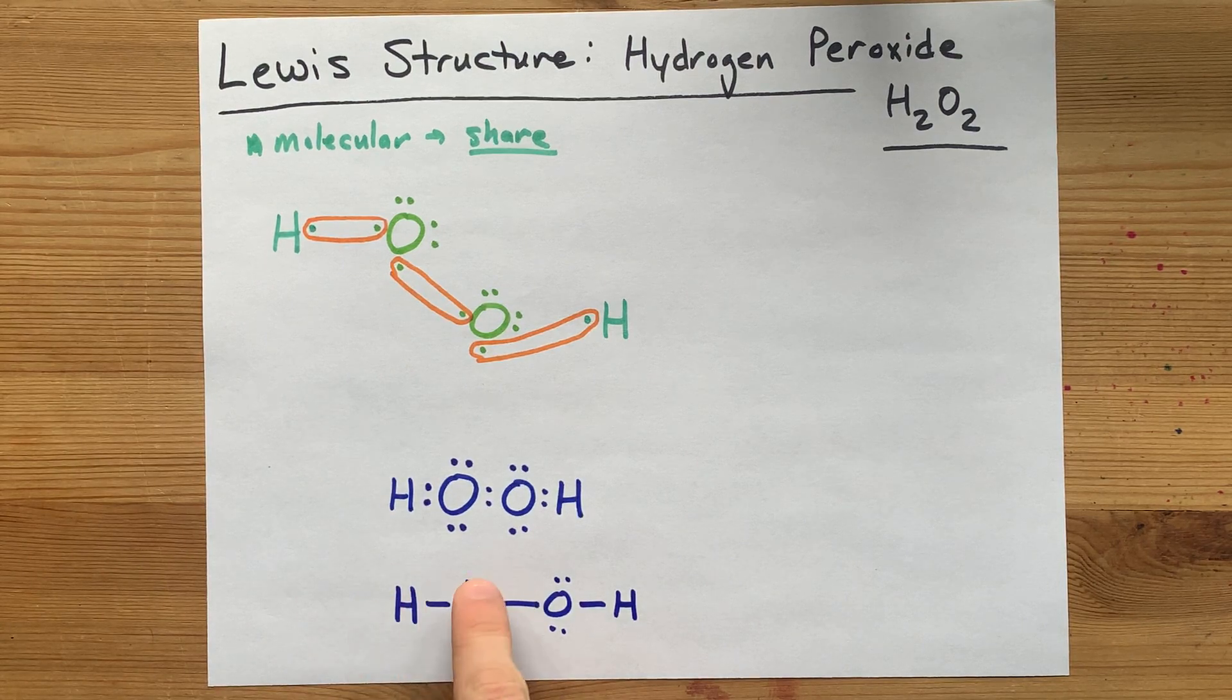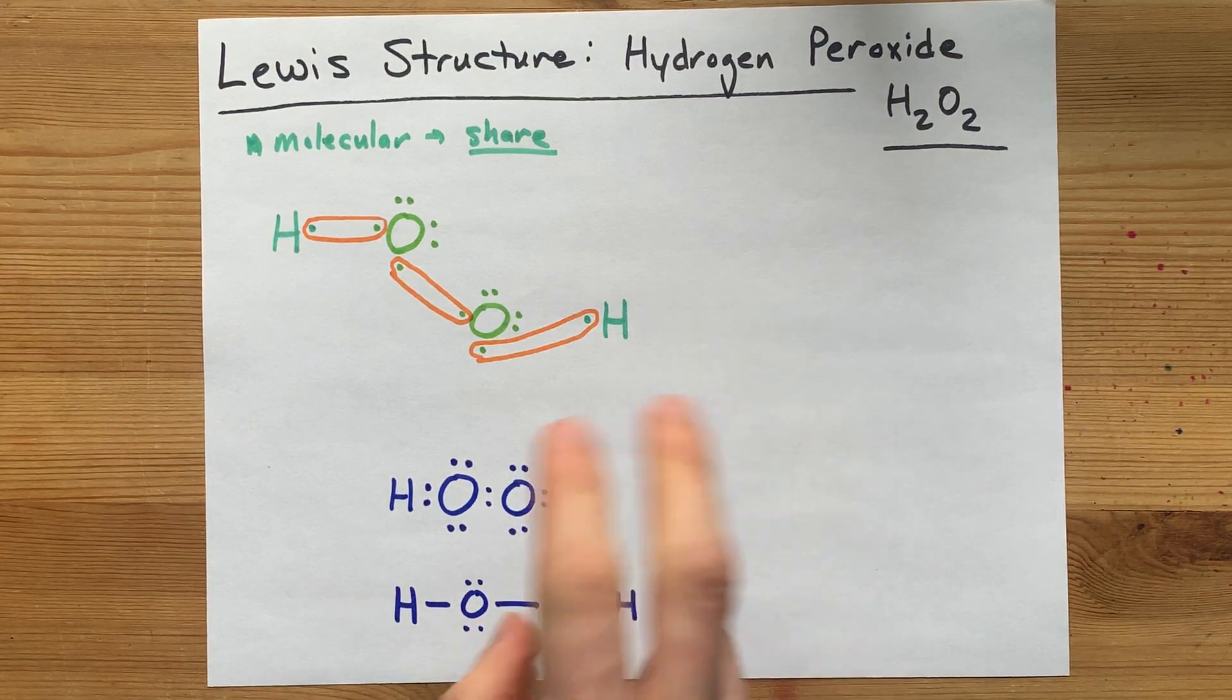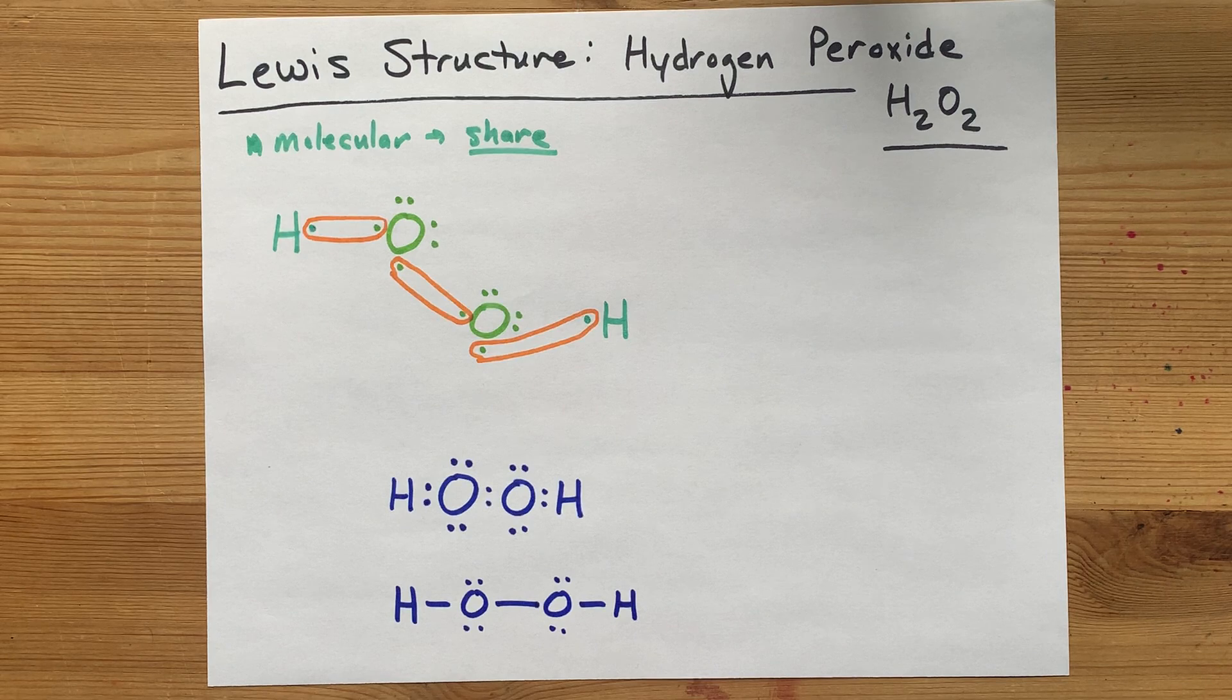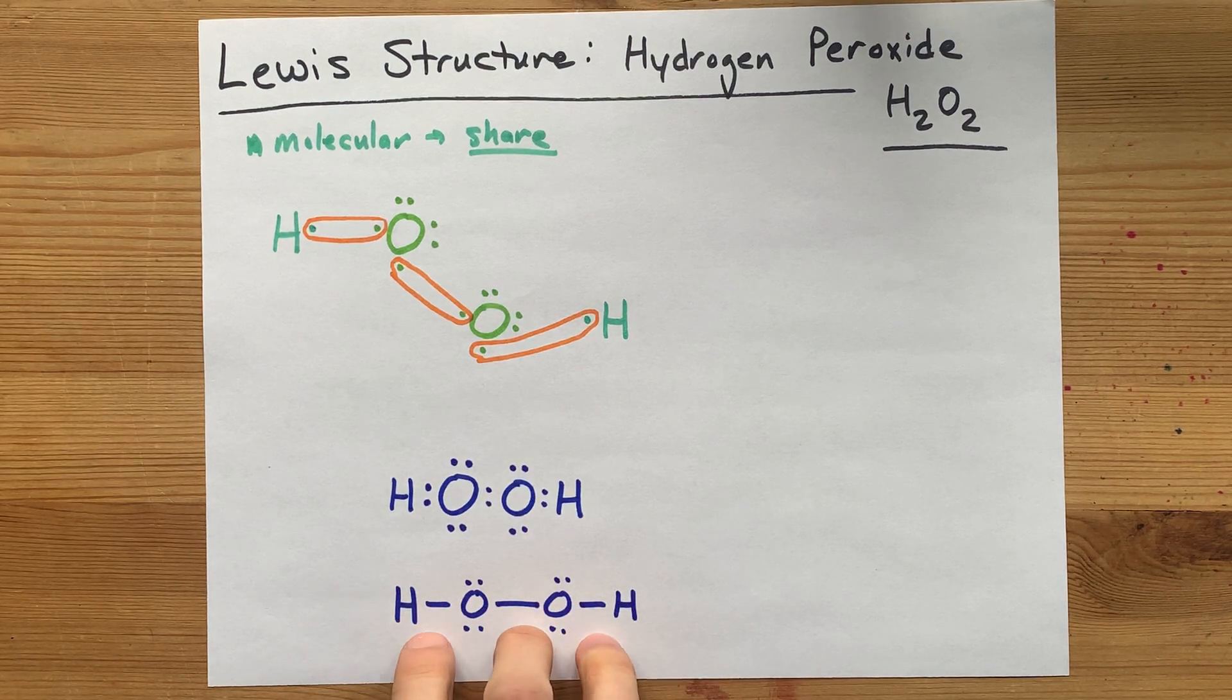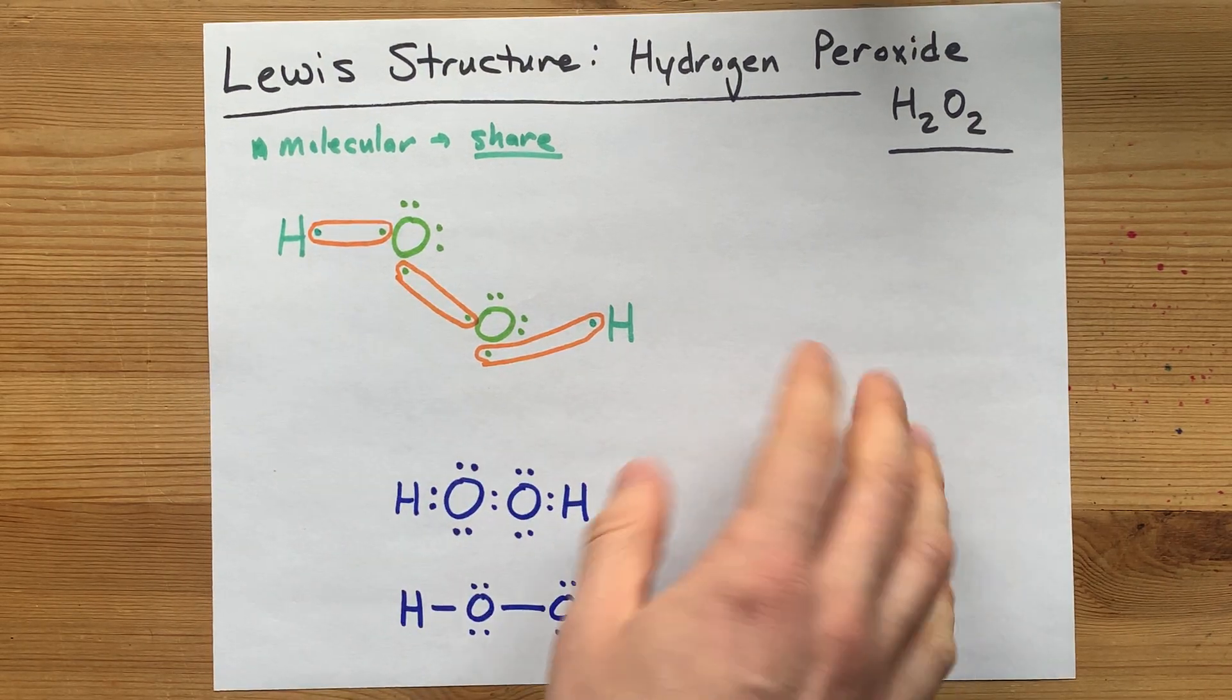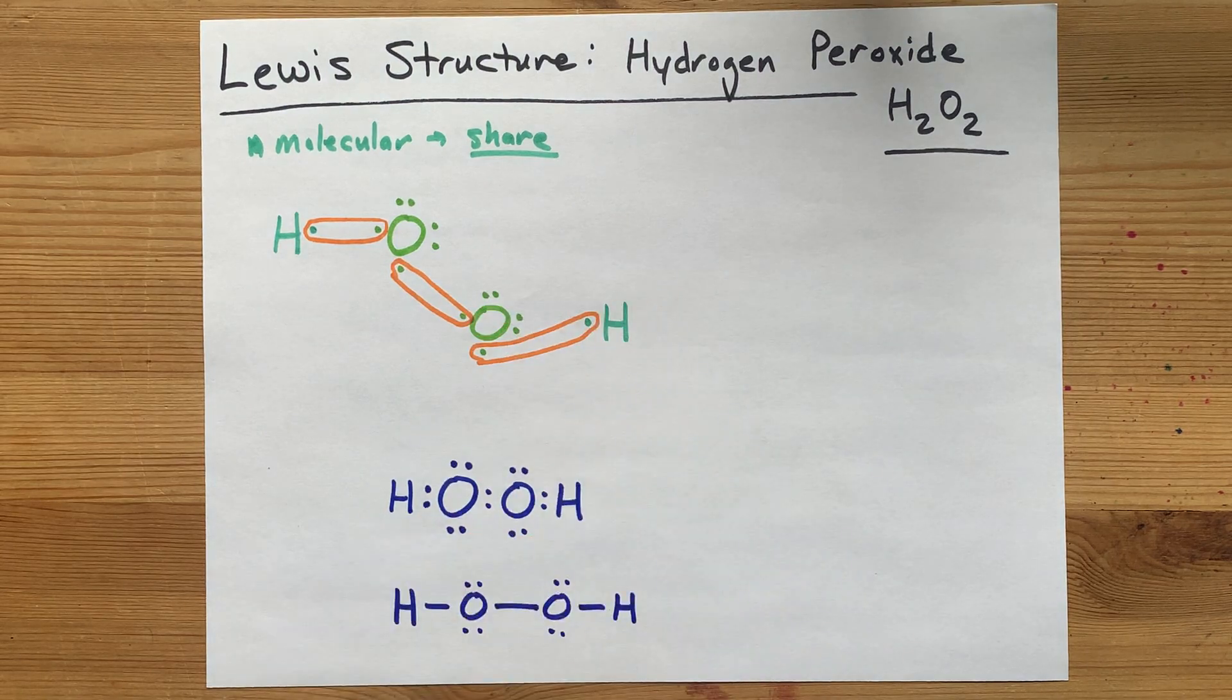Now, this doesn't accurately show the geometry here. You'd need to do something called Vesper for that. But this is the completed Lewis structure. Congratulations. You finished it. Best of luck.